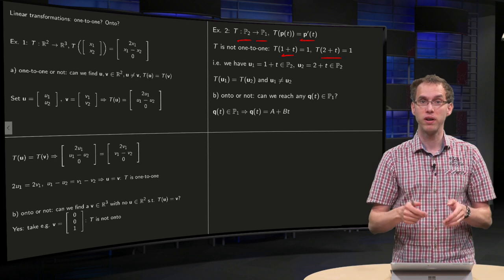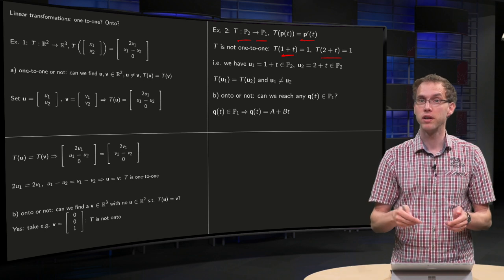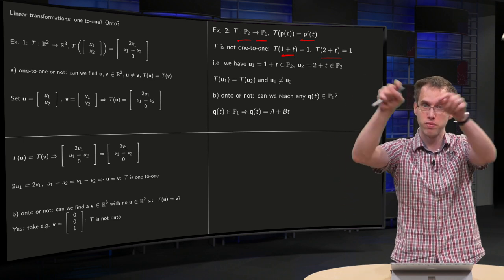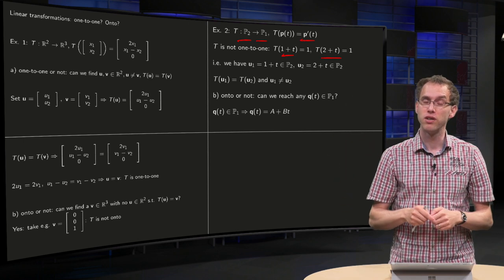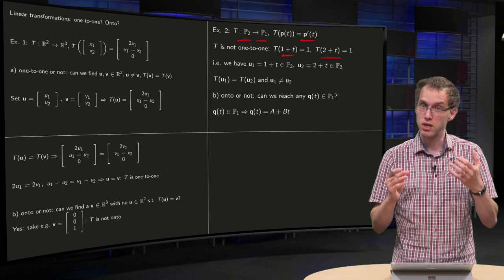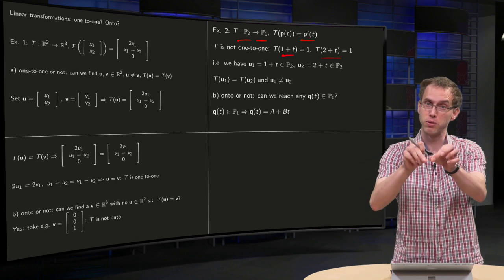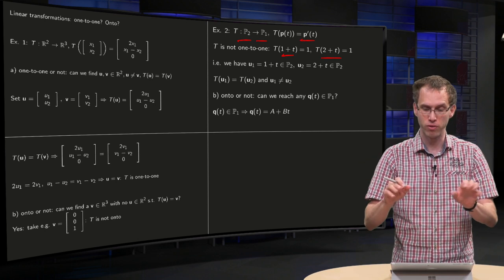they both have derivative 1. So the image of 1 plus t and the image of 2 plus t is 1. You have two different polynomials mapping to the same point. That's not possible if your transformation is one-to-one, so this transformation is not one-to-one.